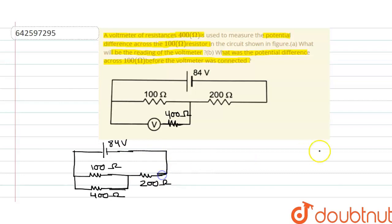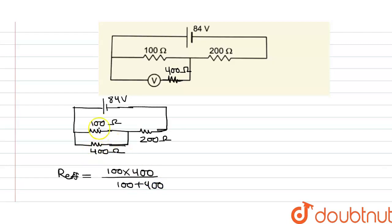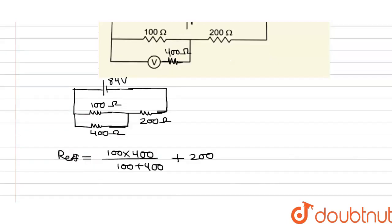Now we can easily calculate the effective resistance of the whole circuit. The effective resistance equals 100 multiplied by 400 divided by 100 plus 400, because the 100 ohm and 400 ohm resistors are in parallel combination, plus 200 ohm in series. After solving, R_effective equals 280 ohm.